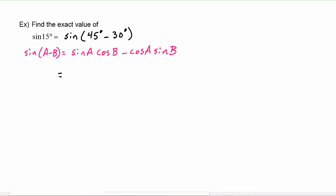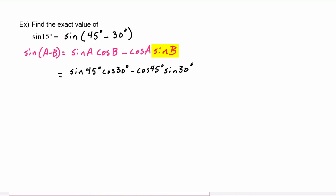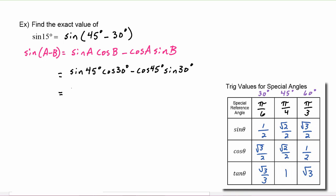So sine of 15 degrees becomes sine of 45 degrees times cosine of 30 degrees, minus cosine of 45 degrees times sine of 30 degrees. Filling in the values: sine 45 is √2/2, cosine 30 is √3/2, minus cosine 45 which is √2/2, times sine 30 which is 1/2.